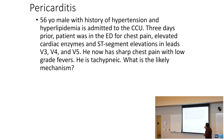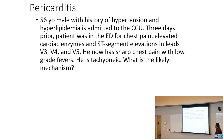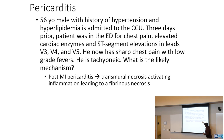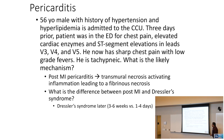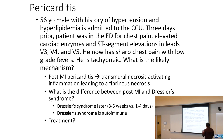A 56-year-old male with hypertension and hyperlipidemia, admitted three days after an MI with ST elevations in V3–V5, now has sharp chest pain and low-grade fevers. This is post-MI pericarditis, related to transmural necrosis activating inflammation causing fibrinous necrosis. Dressler syndrome differs in that it occurs three to six weeks post-MI and is more autoimmune in nature. Treatment for both involves aspirin or NSAIDs to decrease inflammation.